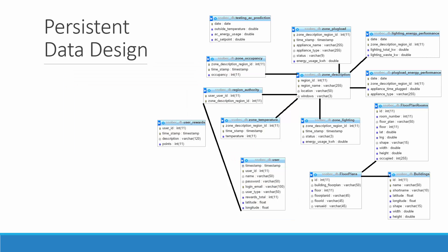The persistent data design is the same as the last iteration. The only difference is that we now have floor plan rooms, floor plans, and building tables used to designate the buildings. You can store several buildings; each building has several floor plans designating each floor, and each floor plan has several floor plan rooms — essentially a group of rooms belonging to that one floor plan.